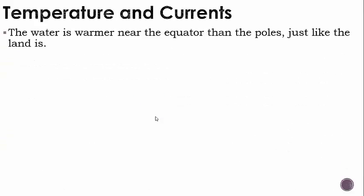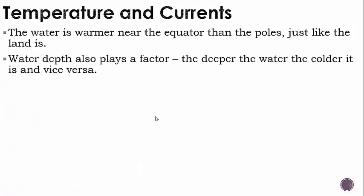Temperature and currents: the water is warmer near the equator than the poles, just like the land is. Water depth also plays a factor — the deeper the water, the colder it is. The warmer the water, the more shallow it is.